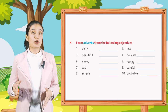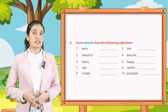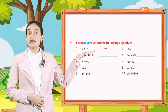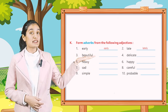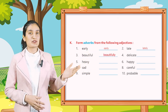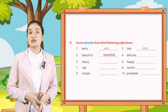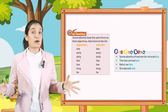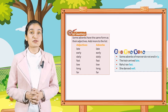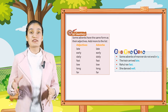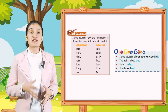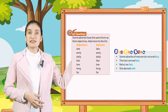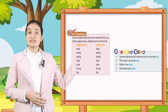Part K: Form adverbs from the following adjectives. First: early → early, late → lately, beautiful → beautifully. In this way, write the other adverbs for the given words. Oral question: some adverbs have the same form as their adjectives. Add more to the list.